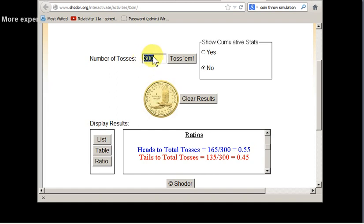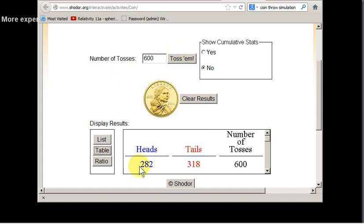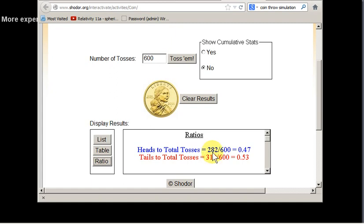Now let's look at 600 tosses. Again, we can bring up the frequency of heads and the relative frequency, which is 0.47.